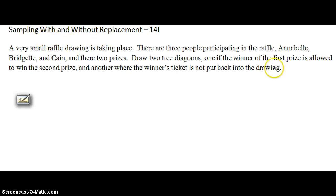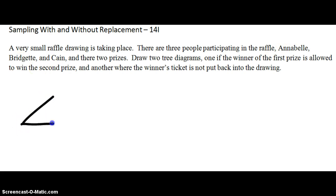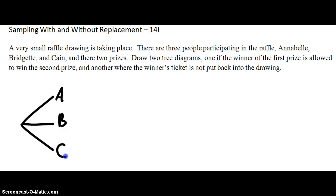So in the first one, the winner of the first prize is allowed to win the second prize, so we replace the ticket back in there. Three people — Annabelle, Bridget, Kane — and that's the first prize.